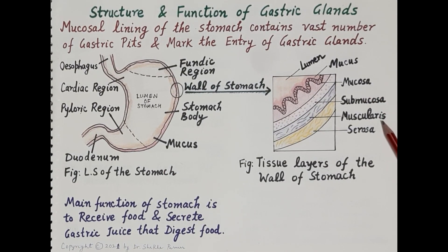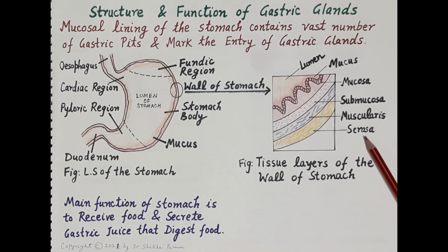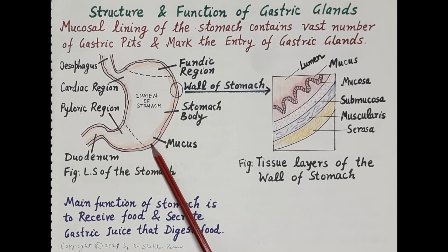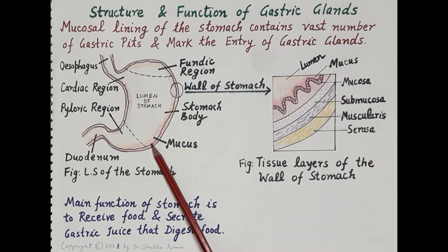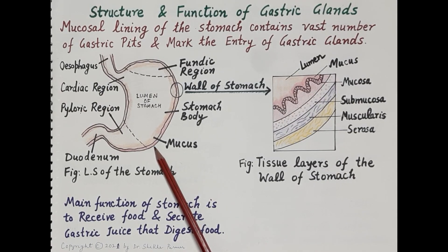Below the mucosa is the submucosa, and below that is the muscularis mucosa, which is made up of smooth muscle layers — namely oblique muscles, circular muscles, and longitudinal muscles. The outermost protective layer covering the wall of the stomach is called the serosa. So the innermost lining is the mucosa, which contains gastric glands and produces mucus, and the outermost layer is the serosa.